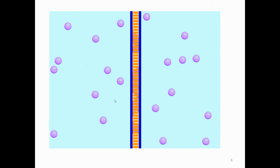The left had the high concentration, the right had the low concentration, and the particles just move from high to low — in this case from left to right — until equilibrium is reached. The animation stopped, but these particles would still be moving across the cell membrane.